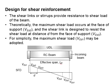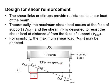Design of shear reinforcement: shear links or stirrups provide shear resistance to shear loads of the beam. Theoretically, the maximum shear loads occur on the face of the support, which is VED2. The shear link is designed to resist the shear loads located at a D distance from the face of the support, which is VED3.